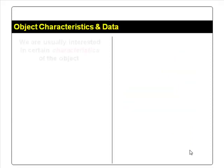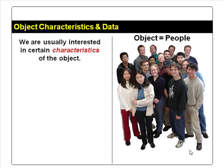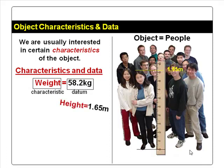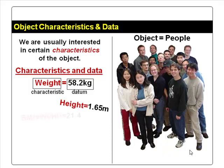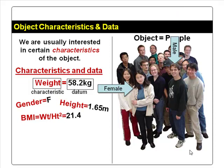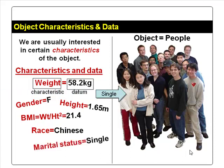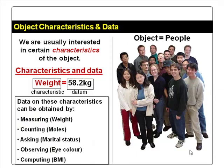Now we look into some characteristics and data of objects, for example people. A characteristic of people is weight, and a datum could be 58.2 kg. Other characteristics of interest could be height, BMI — which is derived from weight and height — gender, race, marital status, age, and so on. These data can be obtained by measuring, counting, asking, observing, or computing.